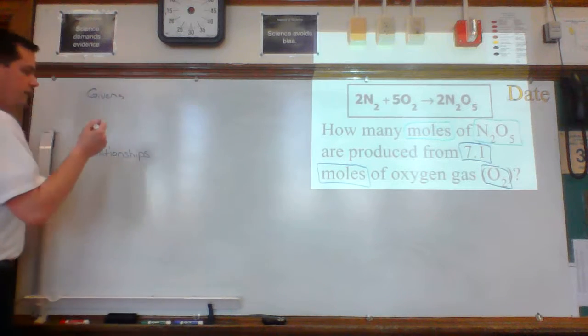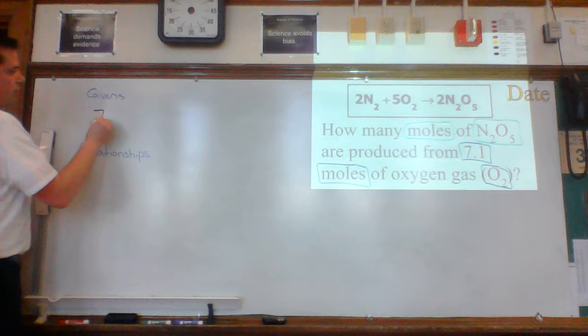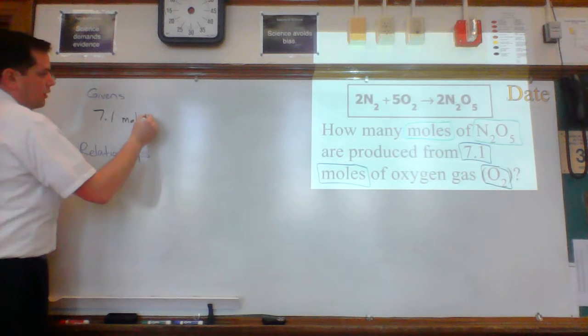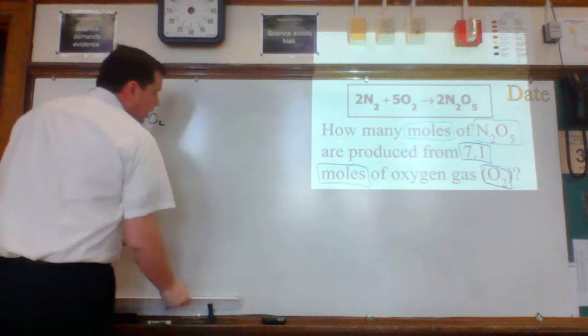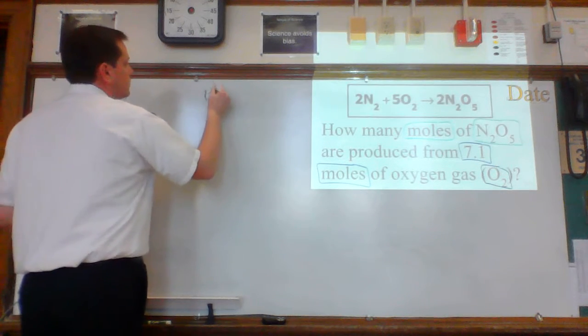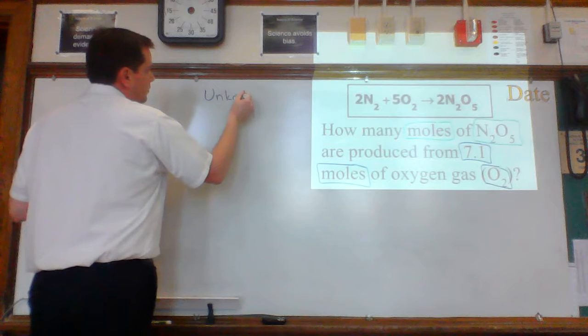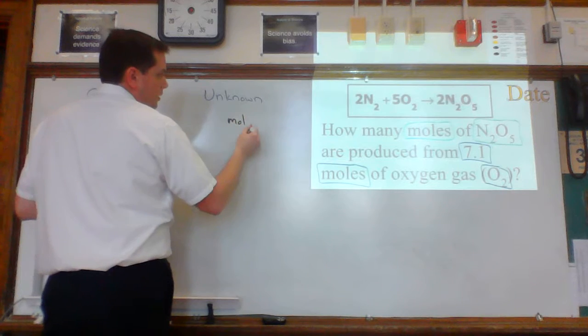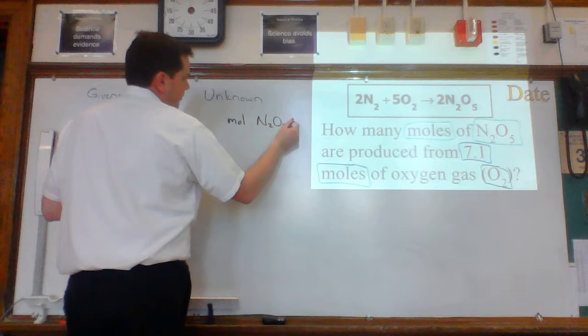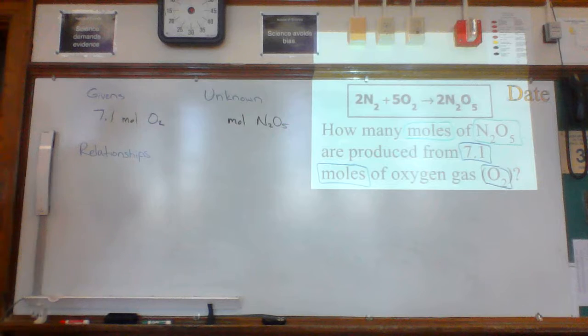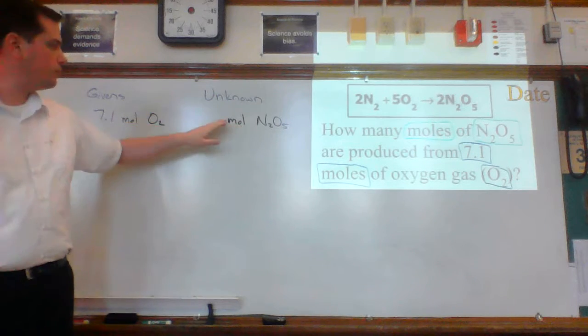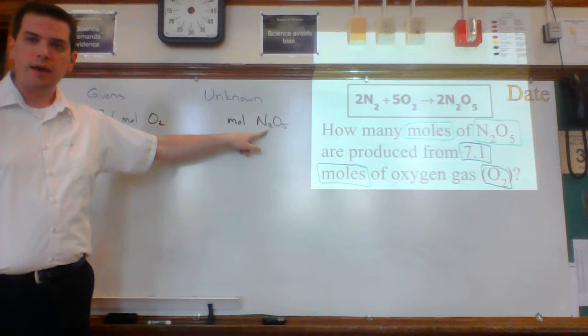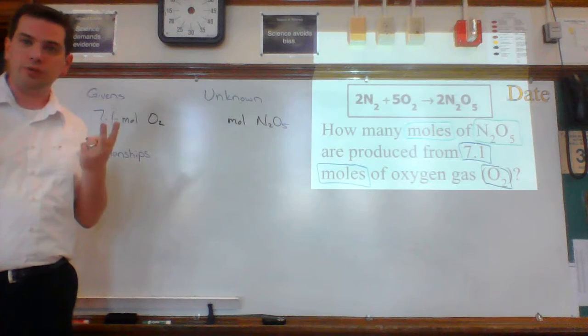The given is 7.1 moles of O2. The unknown is moles of N2O5. So do you see how the unit is moles for both the given and the unknown. But do you notice that the chemical is different? That's different from a one-step or a two-step problem.